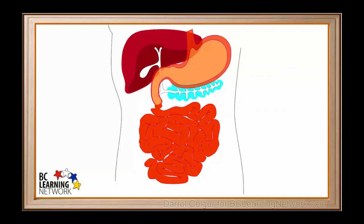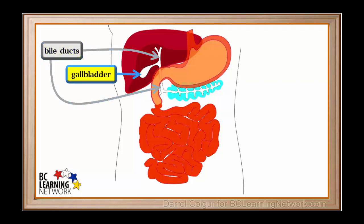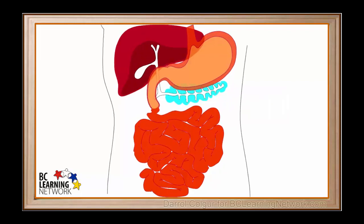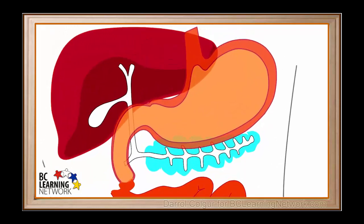There is also a network of ducts or tubes leading from the liver and pancreas to the duodenum. Here are some bile ducts. The gallbladder is an expandable pouch in which bile is stored. It is found just under the liver. And the pancreatic duct carries pancreatic juice from the pancreas to the duodenum.